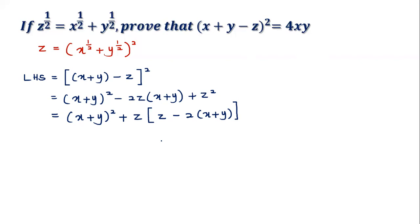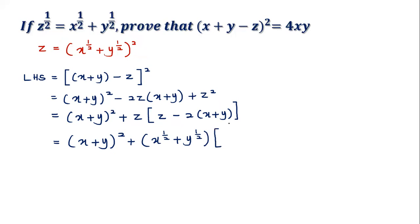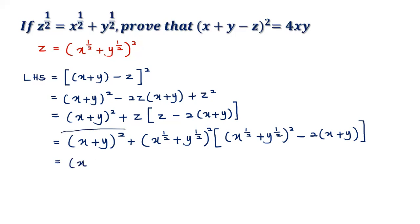After factorizing, I have (x + y)² plus z times the bracket. Now I substitute z using the rearranged given: z equals (x^(1/2) + y^(1/2))². So the expression becomes (x + y)² minus 2(x^(1/2) + y^(1/2))²  times (x + y). I won't expand the (x + y) part — better not to, as the equation will get longer.